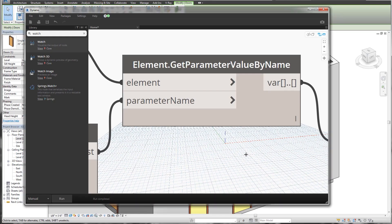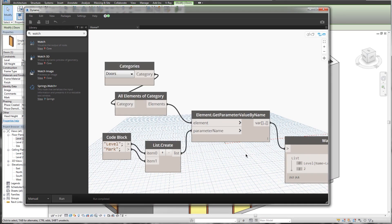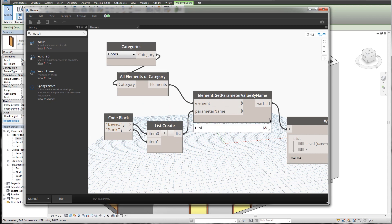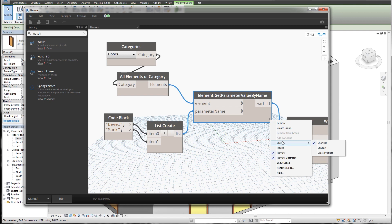So taking that into consideration, let's go back into Dynamo. Let's right click where it says lacing, select lacing, and change it to cross product.